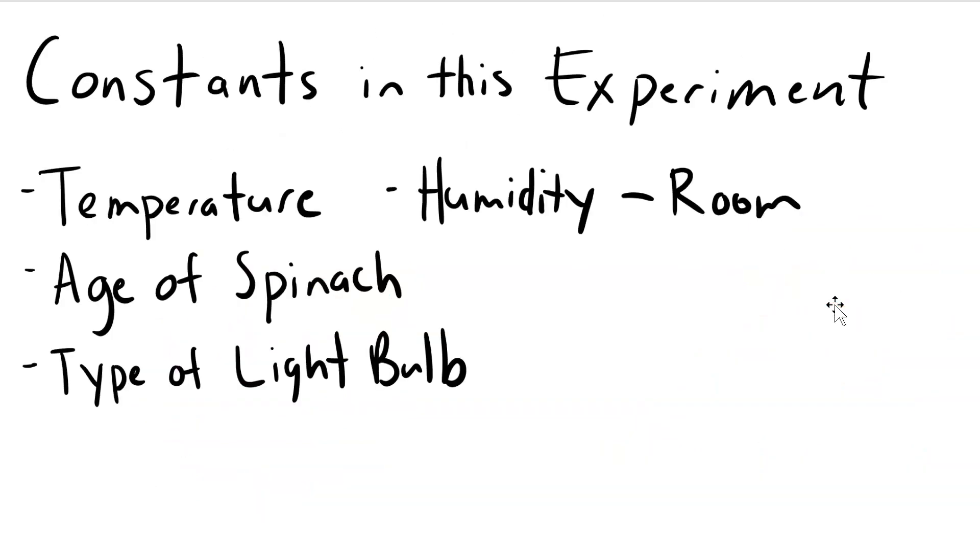Let's review the constants for this experiment. Every experiment has constants that are the same in both the control and experimental part of the experiment. Here, everything except light intensity should be the same for the two cups. If you were to take the temperature of the cups, the temperature should be the same. If you were able to measure the humidity of the room, the humidity should be the same. You're using the same type of spinach—it's not like you're going to allow one to be old and one to be fresh. The light bulbs that are being used are the same. So these are all the constants for this particular experiment.